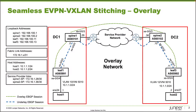Here is our topology. We have four devices: Leaf1, Spine1, Spine2, and Leaf3. Leaf1 and Spine1 are part of DC1, which is a separate data center, and Leaf3 and Spine2 are part of DC2, a different data center. We're going to be setting up seamless EVPN VXLAN stitching to connect these two data centers together with a data center interconnect and get Host1 and Host2 communicating together.